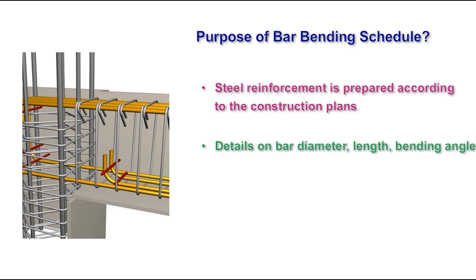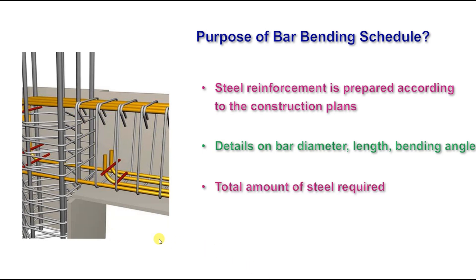Let us look into the purpose of bar bending schedule. Steel reinforcement details will be prepared as per the structural drawings. In that, the details of bar diameter — because we will be having different diameter of bars — the details of bar diameter, length of the bar, and bending angle will be given. For example, if you look into this bar, you can see the hook is bent. This bending angle needs to be given in the bar bending schedule, along with the length of the bar, and finally the total amount of steel required. These details will be given in the bar bending schedule.